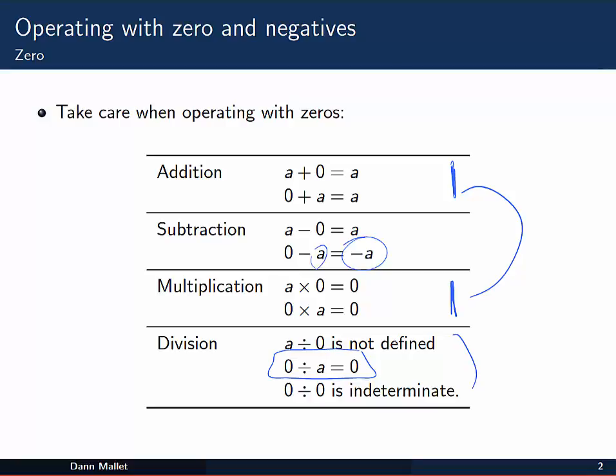So a divided by zero, that one is not defined. We can't divide that way. Zero divided by zero, we call that one indeterminate. It's a slightly different thing and it's a little bit beyond what we are talking about here. But it is kind of important to know that they are slightly different.